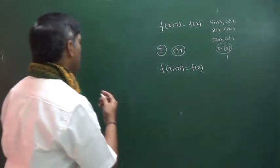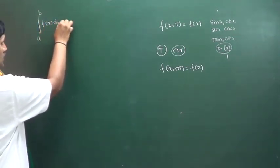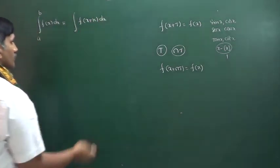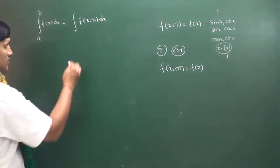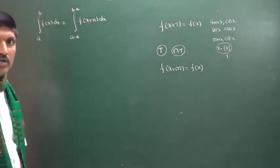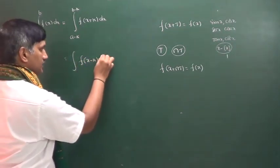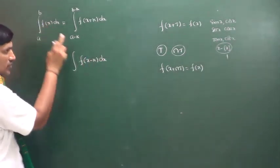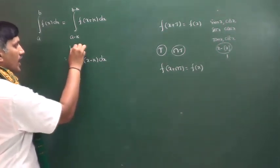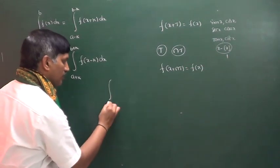One more idea you have to know. For the integral from a to b of f(x)dx, we can write it as f(x+k)dx. Wherever x appears, we write x+k instead. Then we must subtract k from both limits. Conversely, if we have f(x−k), we are writing x−k in place of x, so we add k to both the upper and lower limits.